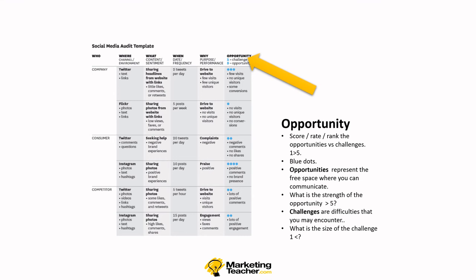So broadly speaking, having undertaken the social media audit, we're now looking at the Opportunity column. We're going to rate this — it's subjective, based on your judgment as a marketing manager or student — but you've undertaken the audit, so you are informed. We score, rate, or rank the opportunity versus the challenges. Keith Casenbury uses blue dots: opportunities represent the free space where you can communicate, scored up to five. Challenges offset any opportunities and represent difficulties you may encounter, also scored one to five. It's all relative to the other challenges and opportunities based on the informed audit.